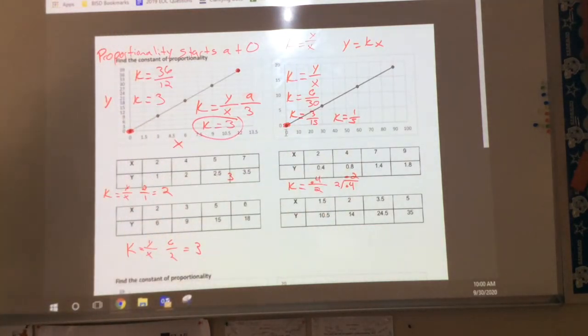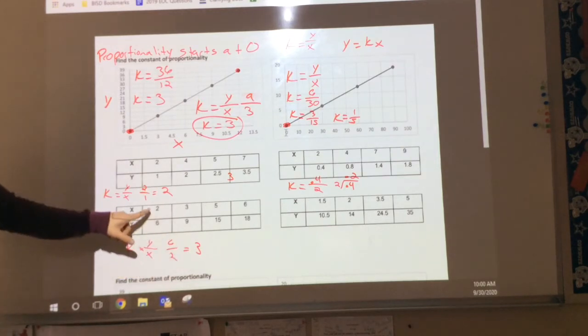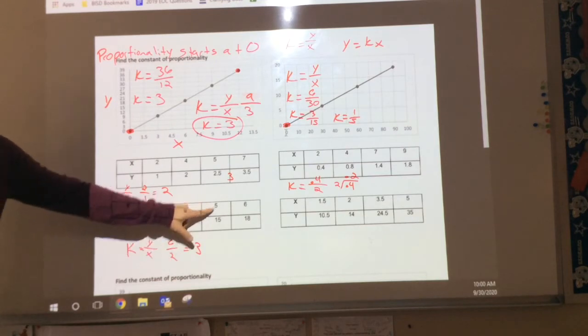Let's drop down to this one. Do we agree that my constant is 3? 2 times 3 is what? 3 times 3 is what? 5 times 3 is what?